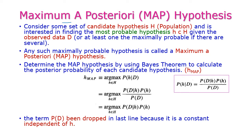First, let us see the maximum a posteriori hypothesis, that is the MAP hypothesis. Here we have a set of candidate hypotheses defined as capital H. From this capital H, we need to find the most probable hypothesis, that is small h. The small h is a subset of capital H given the observed data D, which is the training dataset. We should have at least one maximally probable hypothesis — this is called the maximum a posteriori hypothesis.